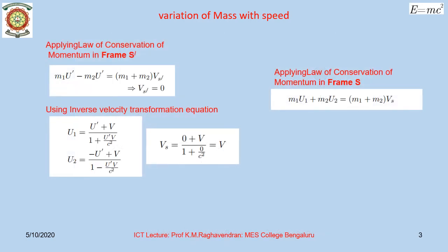Let us apply the law of conservation of linear momentum for the collision between two bodies in the frame S'. The total momentum before collision must be equal to the total momentum after collision. Thus we have M1·U' minus M2·U' must be equal to (M1 + M2)·Vs', giving Vs' equal to 0. Thus, the coalesced body after collision remains at rest as seen from the frame S'.